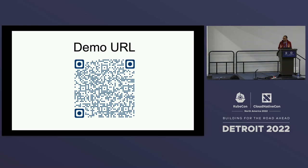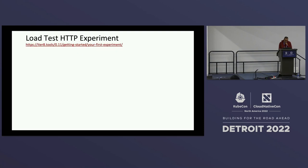All the demos I'm going to be showing today are off of our public iterate.tools URL, so feel free to try it out at your own convenience. These demos should take a couple of minutes end-to-end when you run them in your cluster. The first demo is the load test experiment. We're simply going to be load testing an HTTP service inside the Kubernetes cluster, which will introduce us to the nuances of experimentation. We want to make sure the application handles a given load and meets its performance objectives.